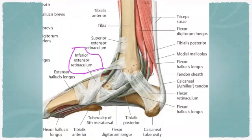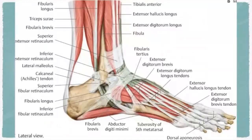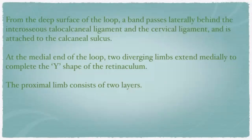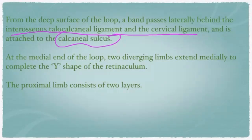The band is also attached to the tibia. The calcaneal sulcus region is continuous with the superior extensor retinaculum. From the deep surface of the loop, a band passes laterally behind the interosseous talocalcaneal ligament and cervical ligament, and is attached to the calcaneal sulcus. At the medial end of the loop, two diverging limbs extend medially to complete the Y-shape. The proximal limb consists of two layers.